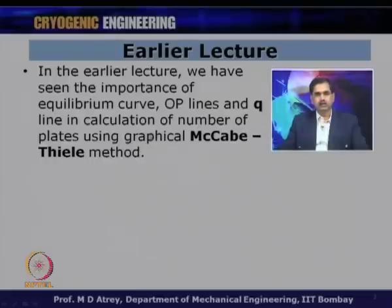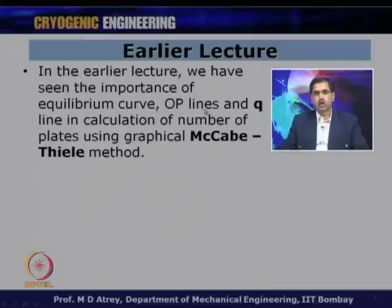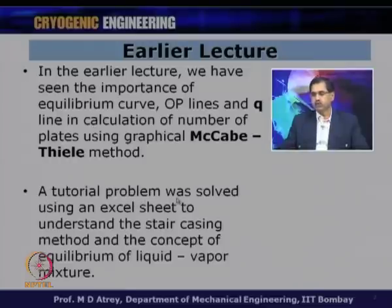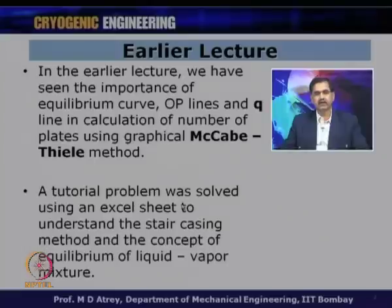What is most important is to know the equilibrium curve, which is given data for a given composition of the feed and the pressure. What is important is to calculate the equations of the operating line, plot it properly along with the Q line, and then do the stair-casing methodology to calculate the number of theoretical plates, both in the enriching section as well as in the stripping section. A tutorial problem was solved using an Excel sheet.